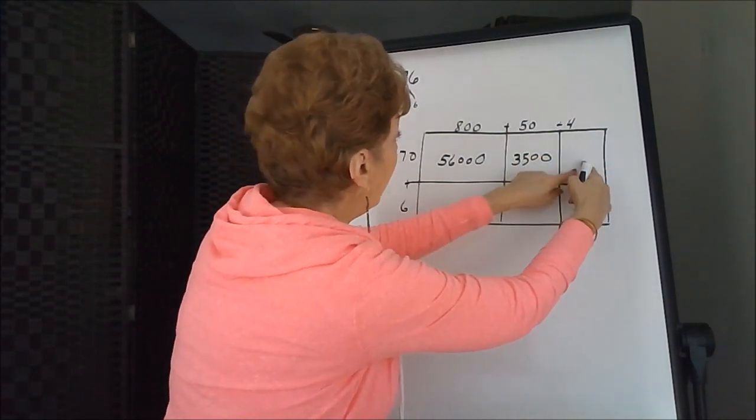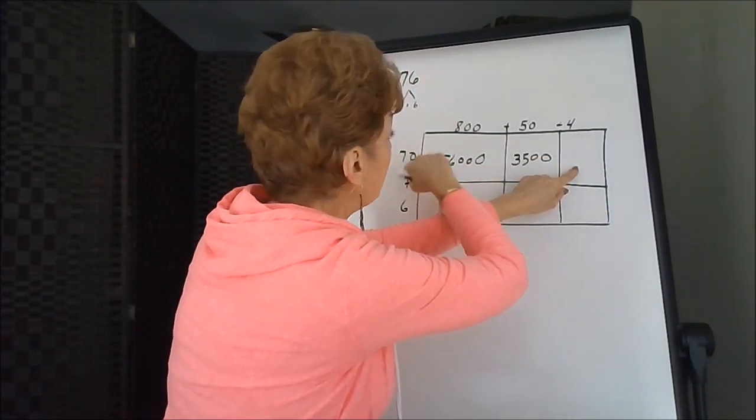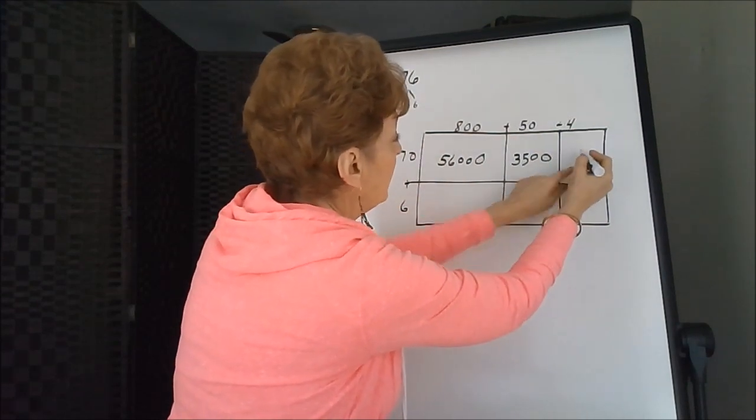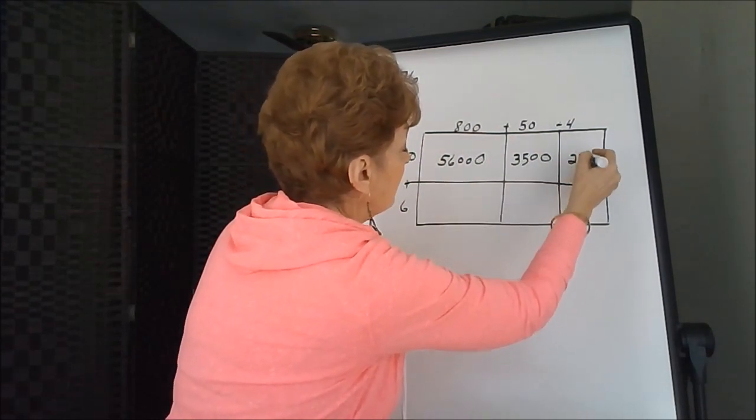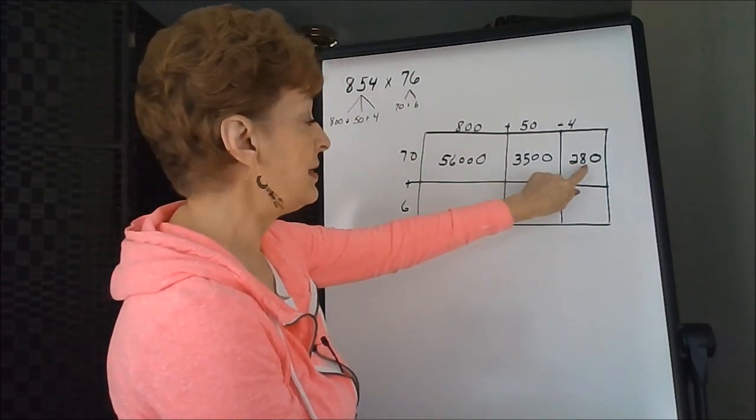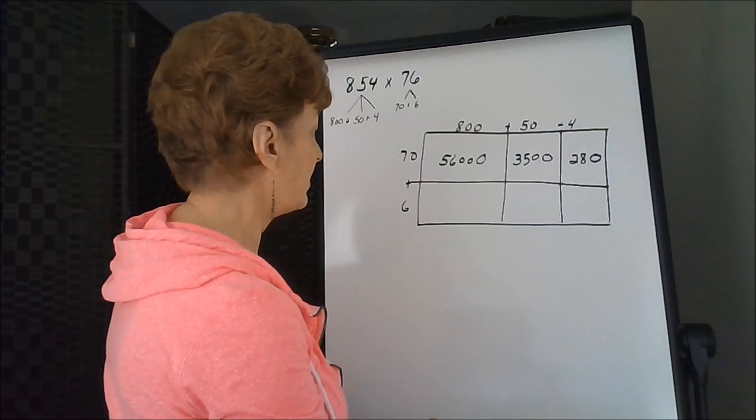And on the last box, we have one zero in the 70. Now 7 times 4 is 28. And actually, that was 280, but it was easy to do if we paid attention to the zeros first.